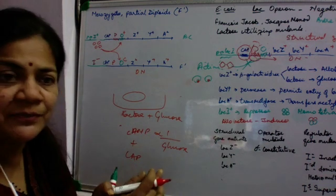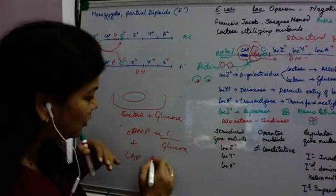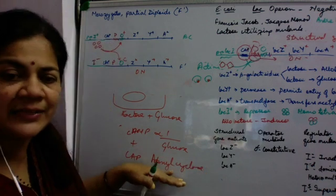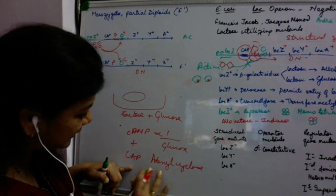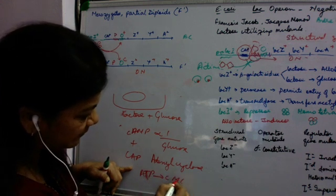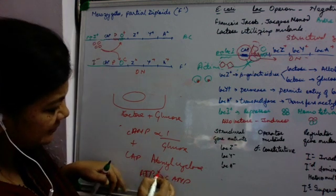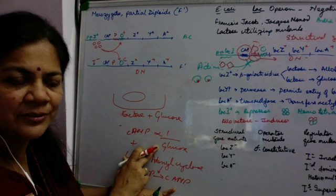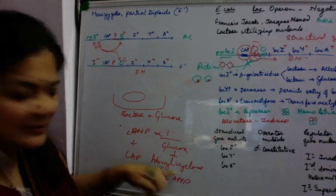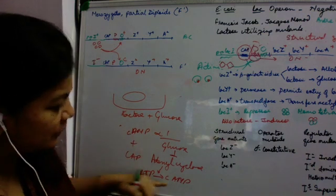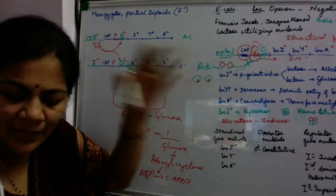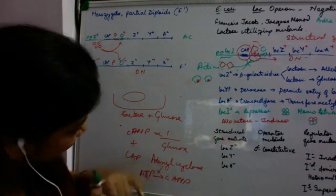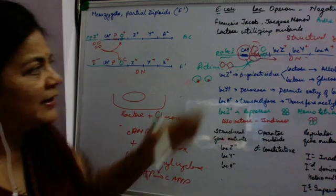Glucose regulates the level of cyclic AMP by inhibiting an enzyme called adenyl cyclase. Adenyl cyclase is necessary for the conversion of ATP into cyclic AMP. When glucose is high, adenyl cyclase is inhibited, so no cyclic AMP is produced and the Lac Operon is off. When glucose is absent, adenyl cyclase is active, converts ATP into cyclic AMP, and the Lac Operon is on.